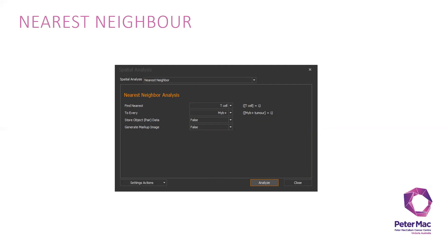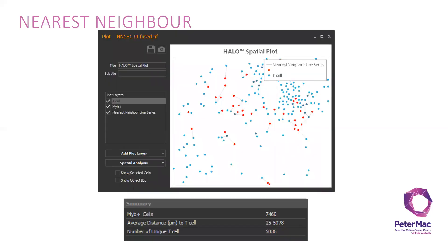Also, it'll have this spatial plot here which you can show in presentations. In summary, it will show you how many MIB-positive cells across the tissue, the average distance of MIB-positive cells, and the number of unique T cells to each MIB-positive cell.